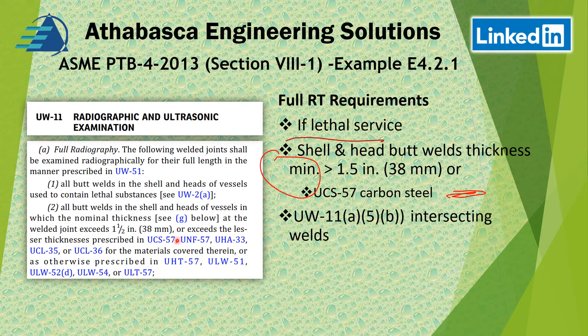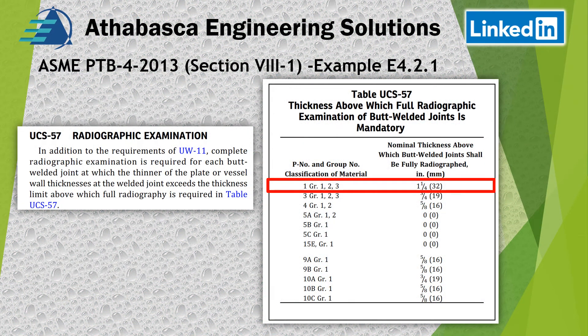This is specific to this example. You can see UCS-57 here; the other clauses cover stainless steel, alloys, and other material classes, while the lower section covers radiography procedures. Under UCS-57, SA-516 Grade 70 normalized is considered a P1 material. By rule, if you're at 32 mm (one and a quarter inch) or thicker, you need to do full RT.